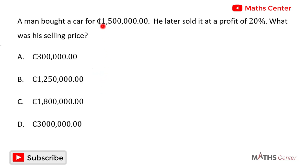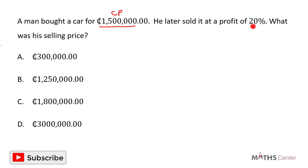The man bought the car for 1.5 million CDs, so this is the cost price of the car. He later sold it at a profit of 20%, so the profit percent is 20.